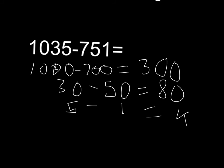Let's do something harder. 1,035 minus 751. First you go 1,000 take away 700 equals 300.